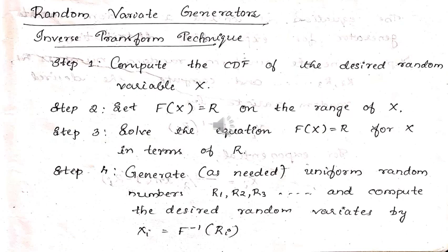In step 4, we obtain the random variate for the distribution, which may require random numbers r1, r2, r3, and so on. The final random variate will be: x_i = f⁻¹(r_i). This equation is suitable for all distributions. Any distribution can be used for obtaining the random variate, and based on the distribution we will get the CDF. In the next slides, we will see several distributions and apply the inverse transform technique to obtain x_i = f⁻¹(r_i).